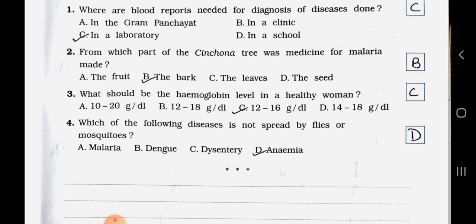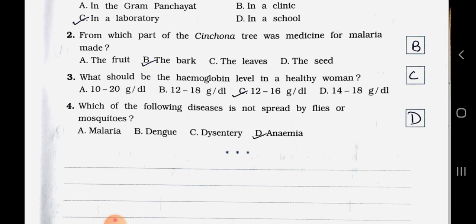Question 3: What should the hemoglobin level be in a healthy woman? A) 10 to 20 g, B) 12 to 18 g, C) 12 to 16 g, D) 14 to 18 g. Answer: Option C — 12 to 16 grams. Question 4: Which of the following diseases is not spread by flies or a mosquito? A) Malaria, B) Dengue, C) Dysentery, D) Anemia. Answer: Option D — Anemia is not spread by flies or a mosquito.